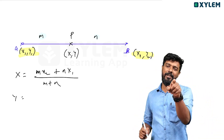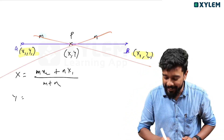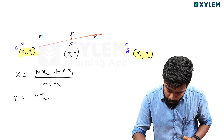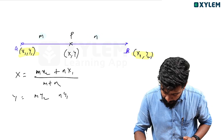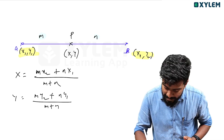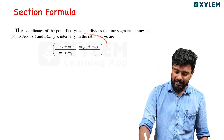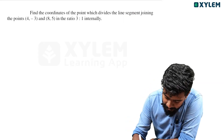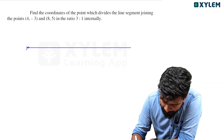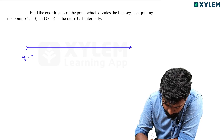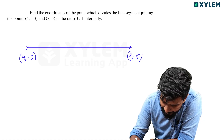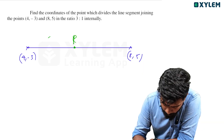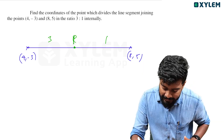Similarly, the y-coordinate of P is: (M × y2 + N × y1) divided by (M + N). This is the complete section formula. Now let's apply it: we have the line segment with points (4, −3) and (8, 5), and point P divides it in the ratio 3 to 1.